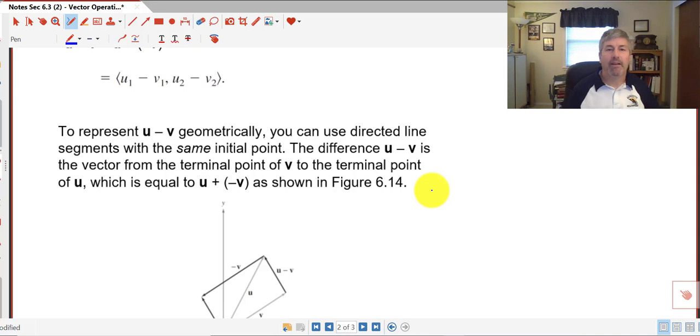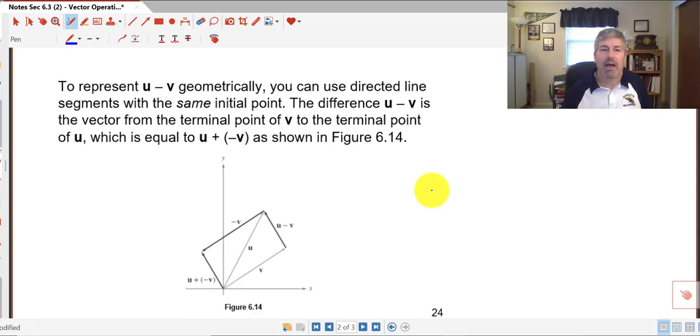So to represent u minus v geometrically, you can use directed line segments with the same initial point. The difference u minus v is the vector from the terminal point of v to the terminal point of u. So if we have vector u and v kind of in light gray here, then u minus v goes from the terminal point of v to the terminal point of u.